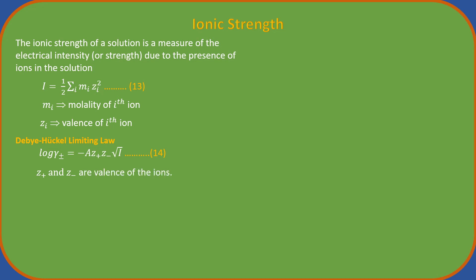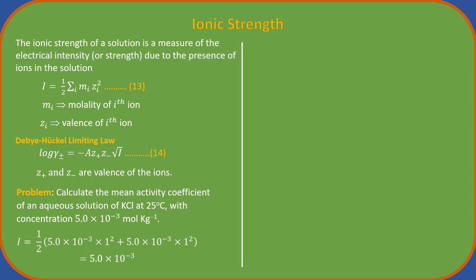We now work out a problem related to ionic strength and activity coefficient. Let us calculate the mean activity coefficient and aqueous solution of HCl of known concentration. First let us calculate the ionic strength. Potassium chloride is a uni-univalent electrolyte. For aqueous solutions at 25 degrees Celsius, A equals 0.509. Therefore, from Debye Huckel limiting law we have. The experimental value is 0.927, which is very near to the calculated value.